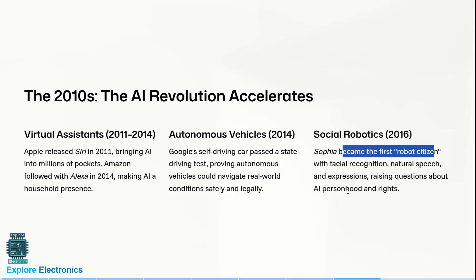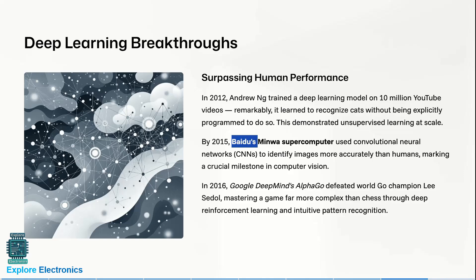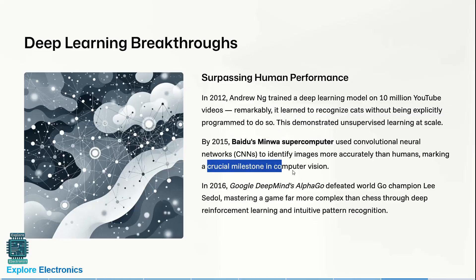Sophia became the first robot citizen, capable of facial expressions and natural speech, raising questions about AI personhood and rights. In deep learning breakthroughs, Andrew Ng trained a deep learning model on 10 million YouTube videos, and it learned to recognize cats without being explicitly programmed to do so, demonstrating unsupervised learning at scale.